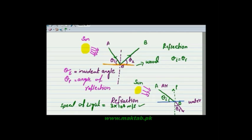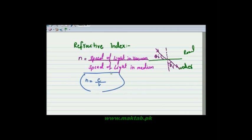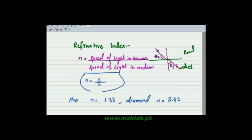The refractive index depends on which medium to which medium is defined. The refractive index: you have seen that this is the speed of light in vacuum. In other mediums it is less than the speed of light in air. We call the refractive index — in water, the refractive index is 1.3. Similarly, the value of diamond is equal to 2.2. Therefore, the refractive index is different for different materials.